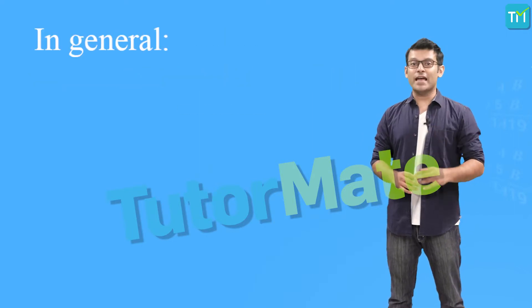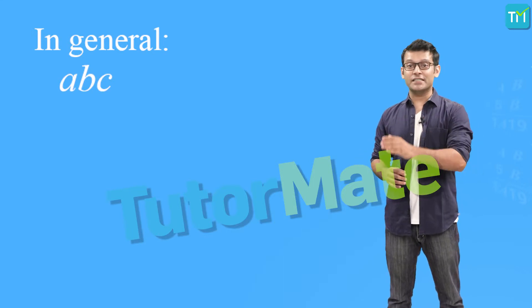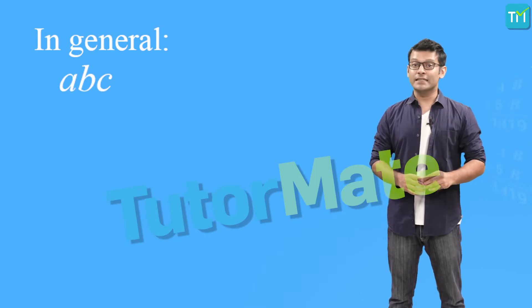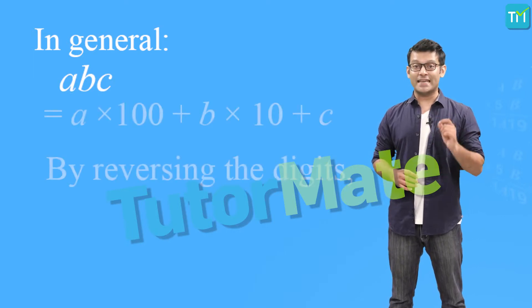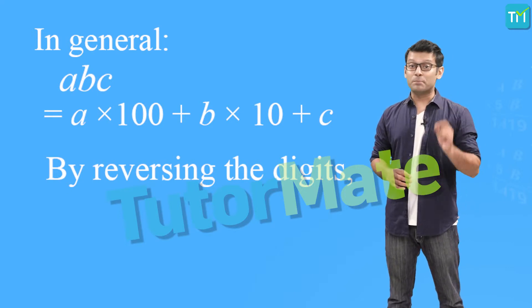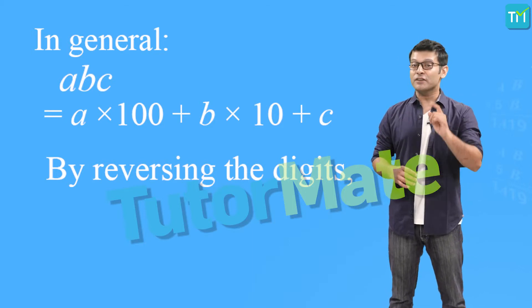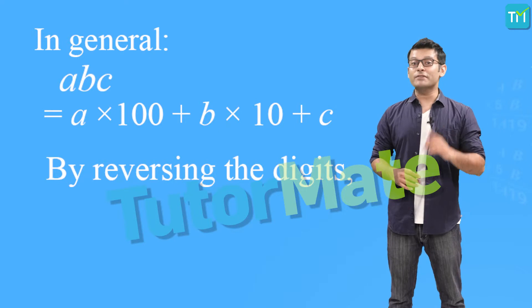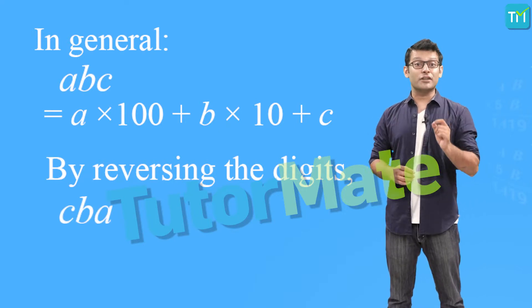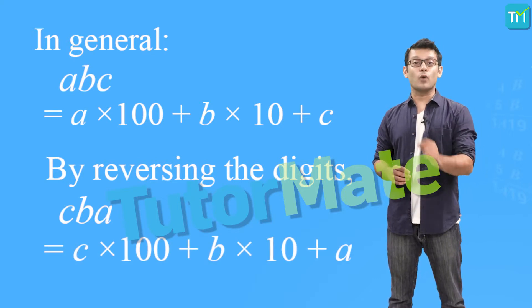Now, in general, if we have a number ABC, where A, B and C are the digits in the hundreds, tens and ones place respectively, then its general form is A into place value of A that is 100 plus B into 10 plus C into 1. Now, if we reverse the digits, we will have the number as CBA and then its general form will be C into 100 plus B into 10 plus A into 1.